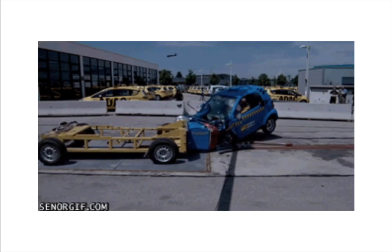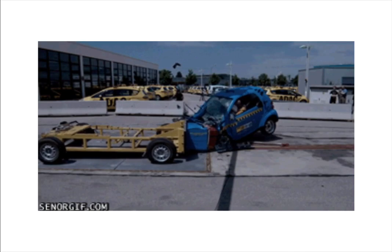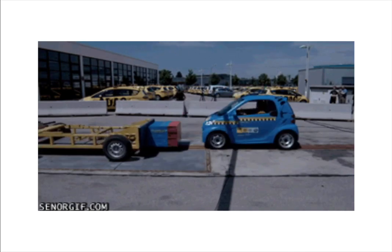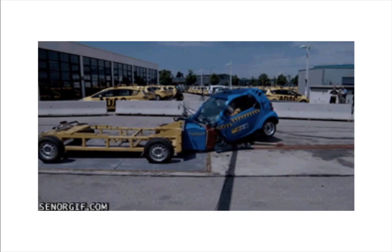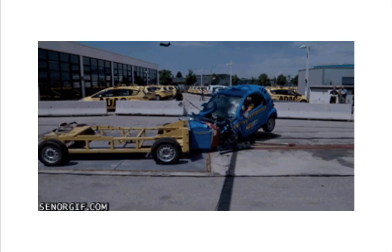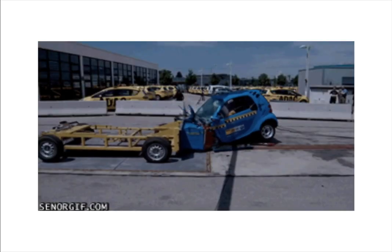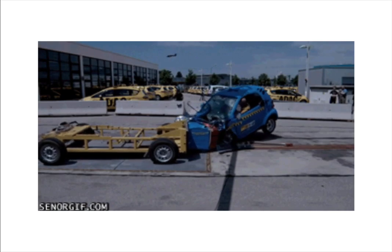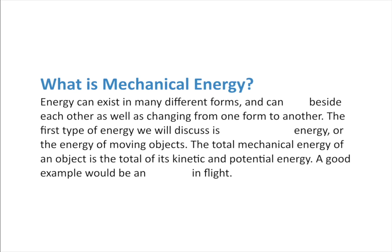Where does the car get the energy to move from? If you're clever, you're going to say the engine, of course. Where does the engine get its energy? Well, it comes from the gasoline in the car. What type or form of energy is gasoline? Because it's not the same thing as moving. So obviously, energy must have changed from one form to another in order to have this crash test. We're going to go through seven different forms of energy.